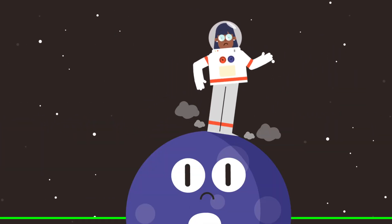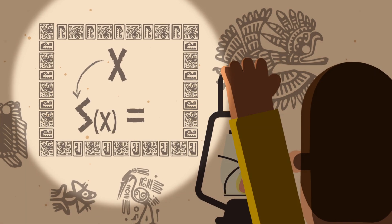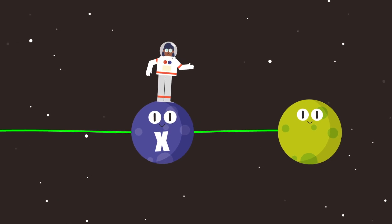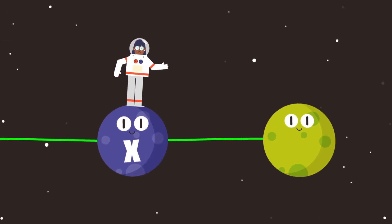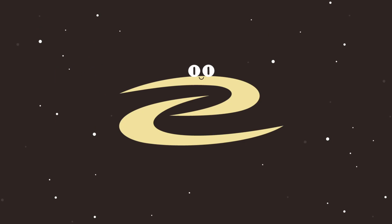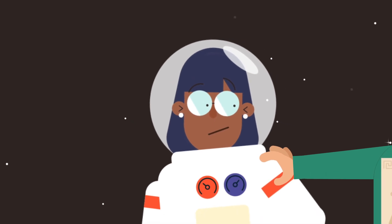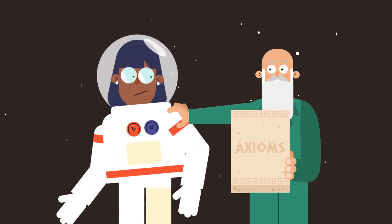But, hang on a minute, what if there is a number x for which s of x equals x? If this number existed, we would be stuck at x, unable to generate more numbers. Infinity wouldn't exist, and we can't have that. We need numbers.